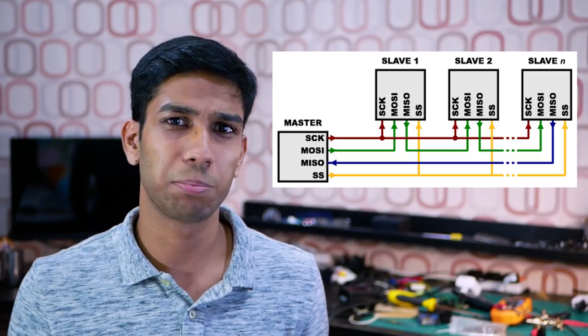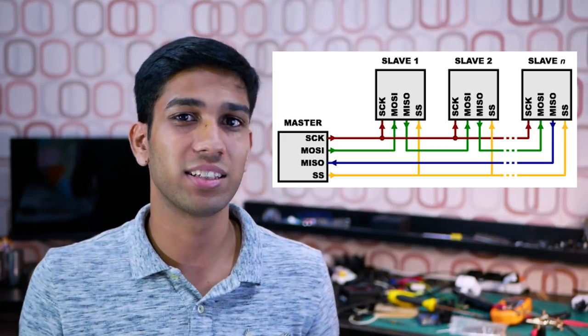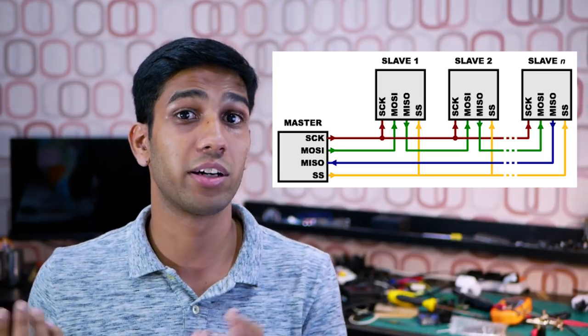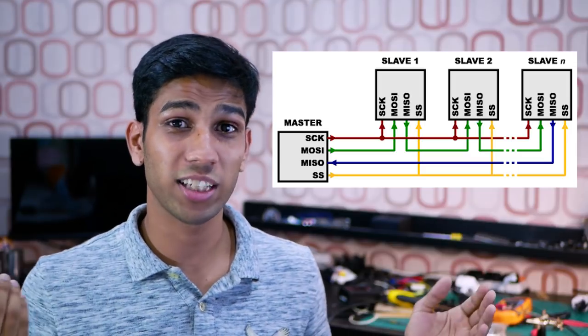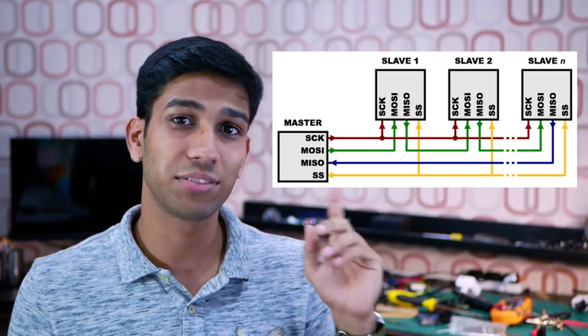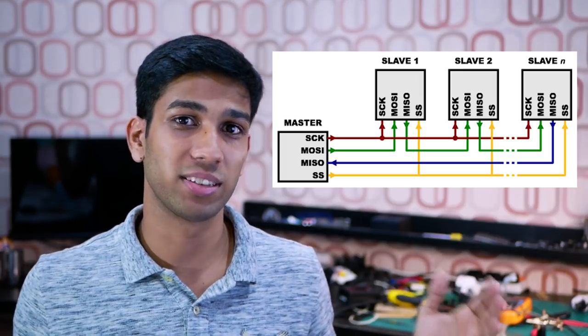An alternative to this is the daisy chaining approach, as you can see here. Like I mentioned, the last approach was similar to how electronics are wired up in parallel. In this case, the daisy chaining approach is similar to how electronics might be wired up in series. This method allows us to address all the SPI slaves with just one slave select line, but you must send enough data for all the SPI slaves.